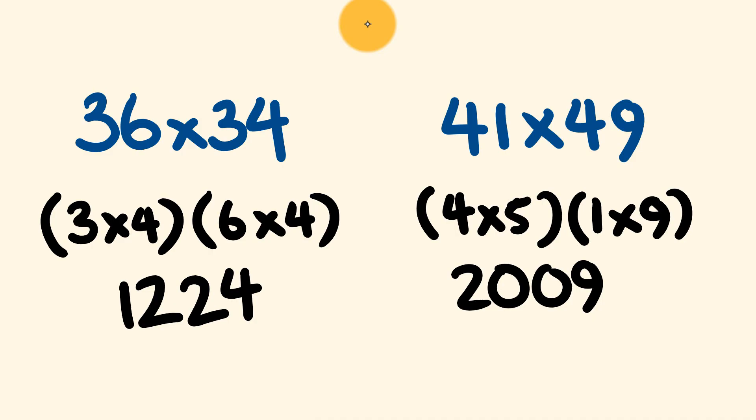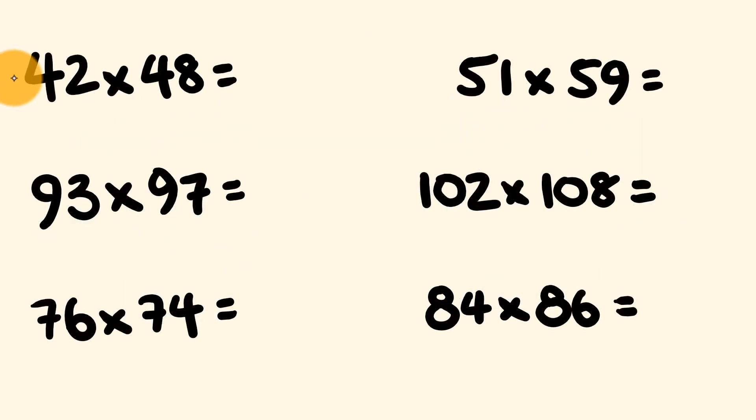Well, I said at the start of the video, you'll be able to solve a few problems. Remember those ones I showed you? What about you give those ones a go? So we had 42 times 48, 93 times 97, 76 times 74, 51 times 59, 102 times 108, and 84 times 86. And they all fulfill those two different things, where the tens digits are the same and the units add up to 10. So you don't even need to pause the video. Let's just do these instantly.